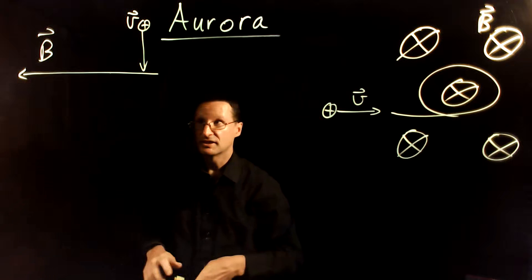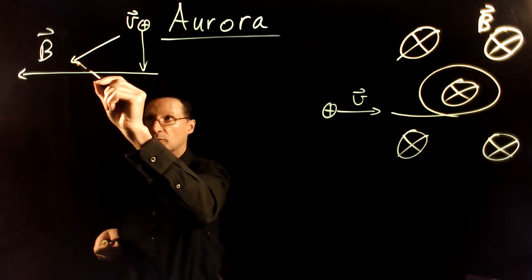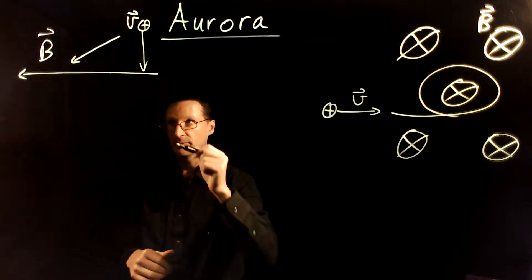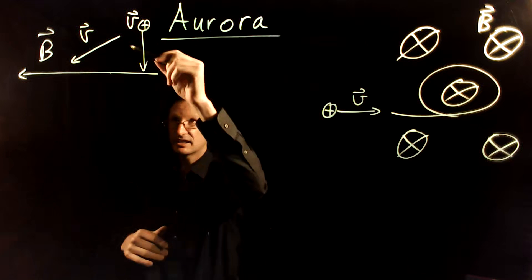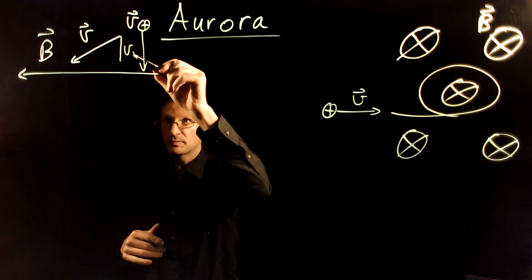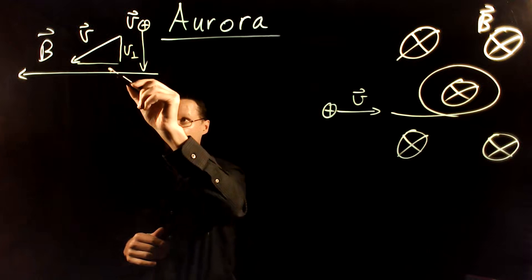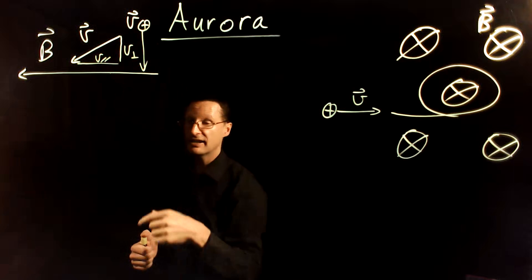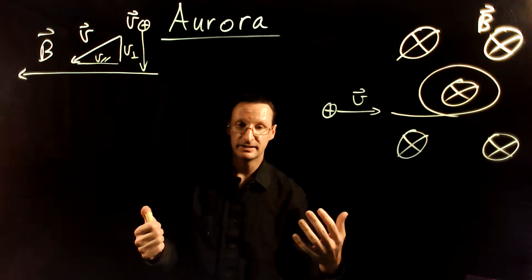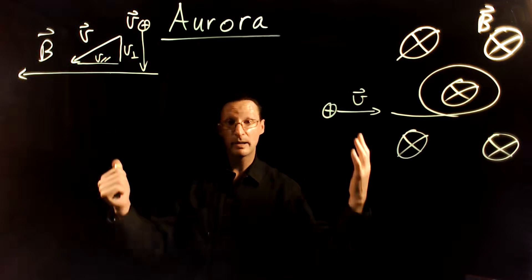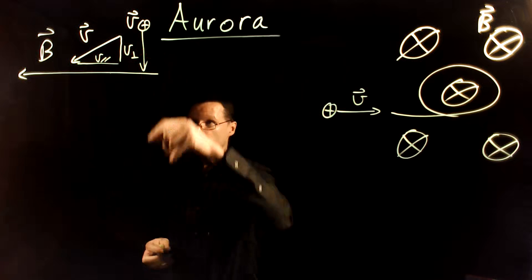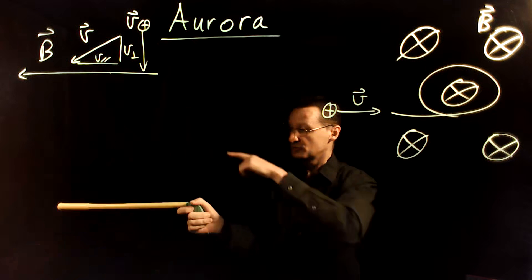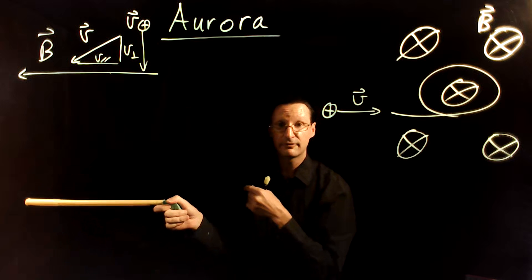So let's get back to our original question: what happens when the velocity comes in with some component that's neither exactly perpendicular nor parallel to the field? In that case, think of the velocity vector as having two parts — a component perpendicular to the magnetic field line, and a component parallel to the field. The parallel component is unaffected by the magnetic force. The perpendicular part still causes the particle to turn in circles around the magnetic field line.